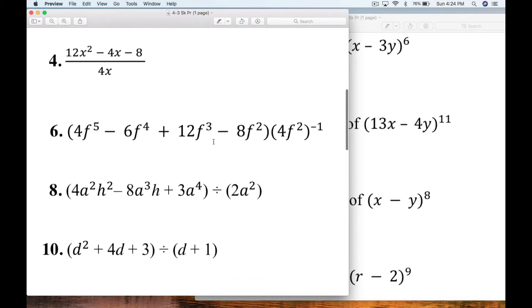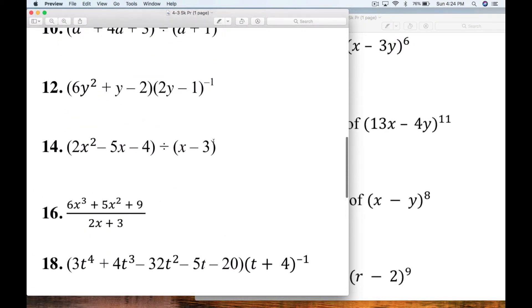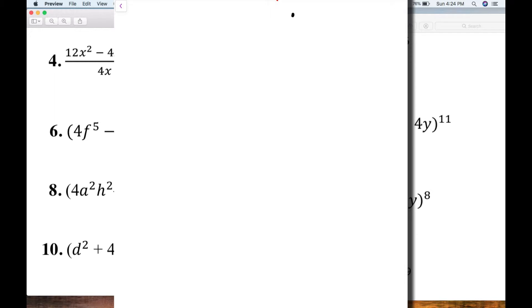So the next question I had was number 6 on page 19 of your review. So let's look at number 6. So let me rewrite the problem here. 4f to the 5th and then times 4f squared raised to the negative 1.